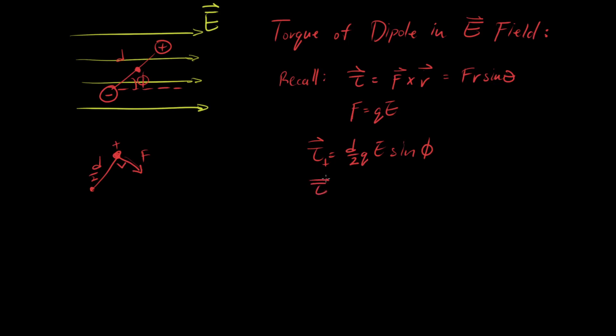Conversely, or likewise, it's the same thing on the bottom, and it swings upwards, and the angle should be equal in that sense. So it will be d over 2, q, E, sine phi.